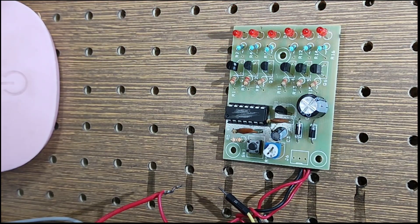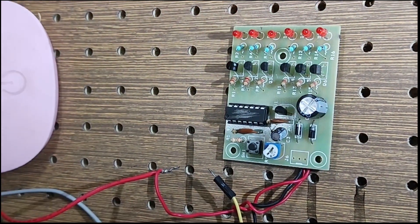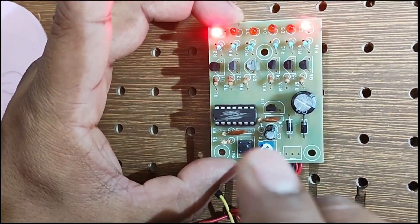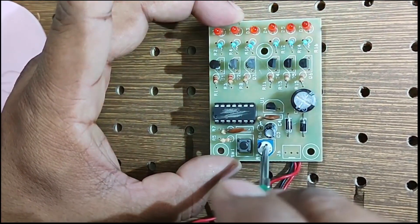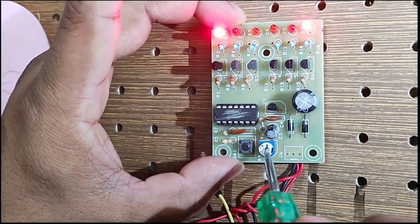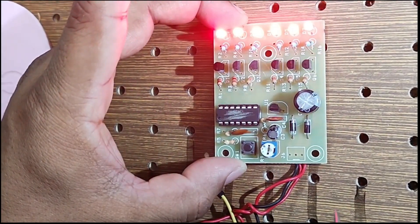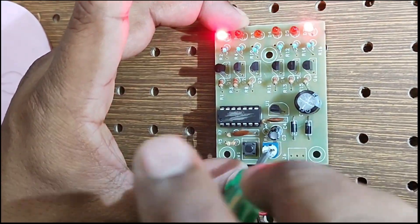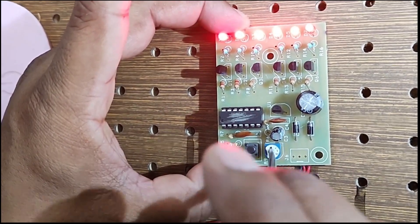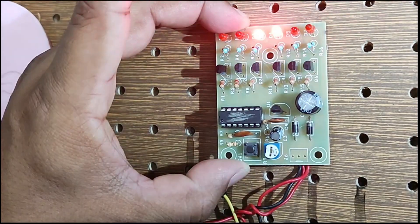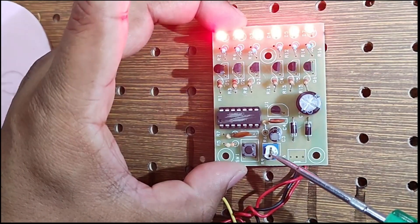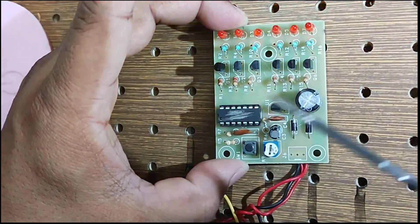Let us change the preset. Now see, the speed is different. If I increase, you get a different speed. Now I increase the speed. This preset or pot is used to increase and decrease the output sequence.